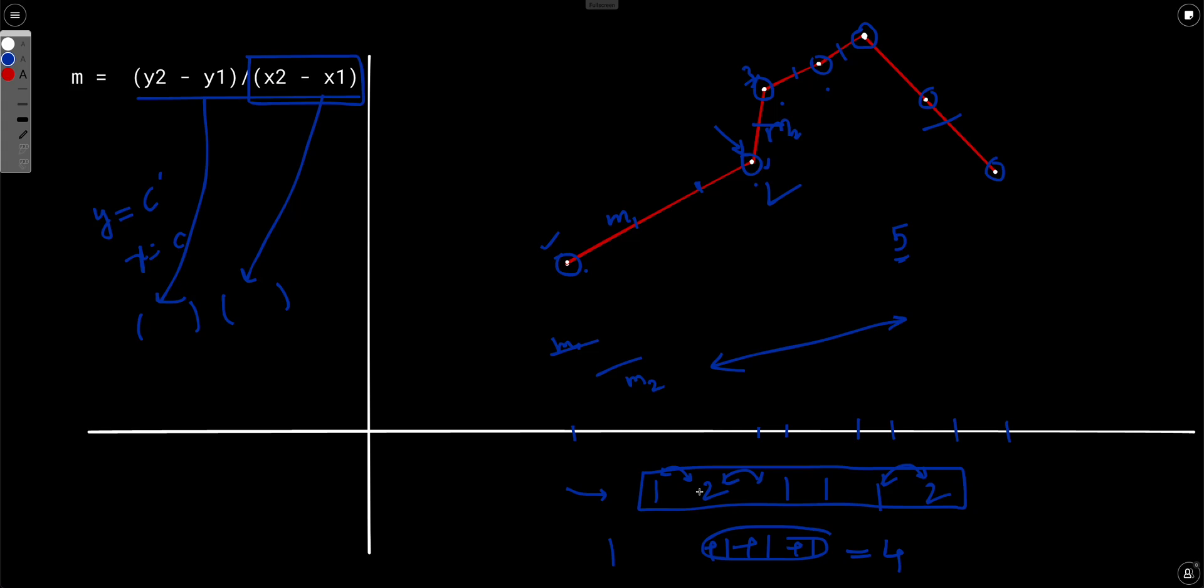So first of all, let's say y2 minus y1 is 4 and x2 minus x1 is 6. So this (4, 6) is also equals to (2, 3).